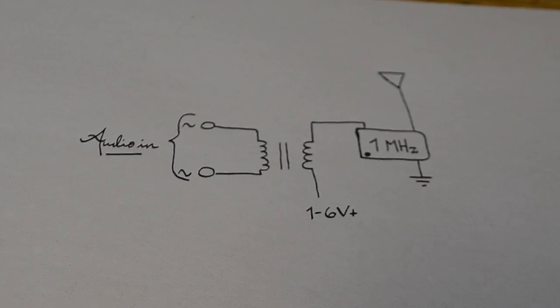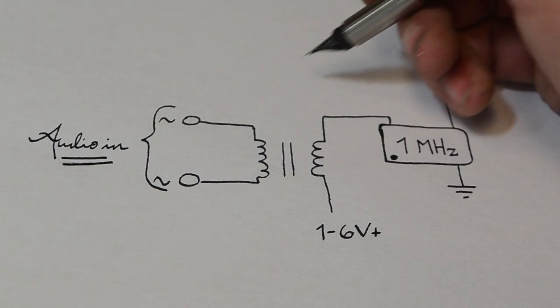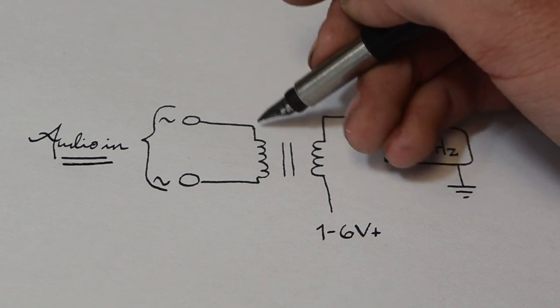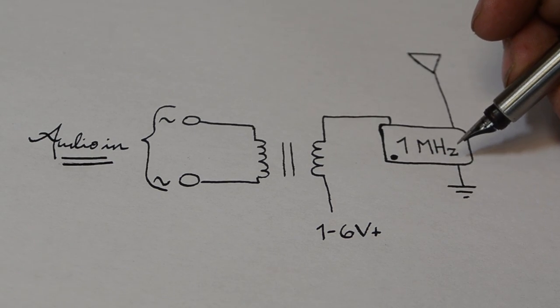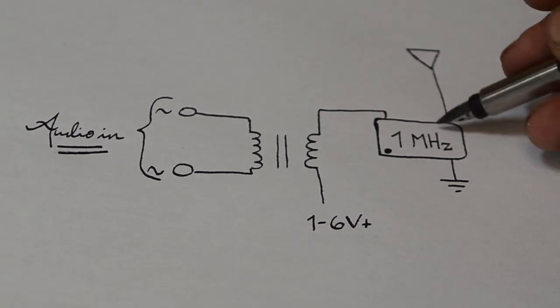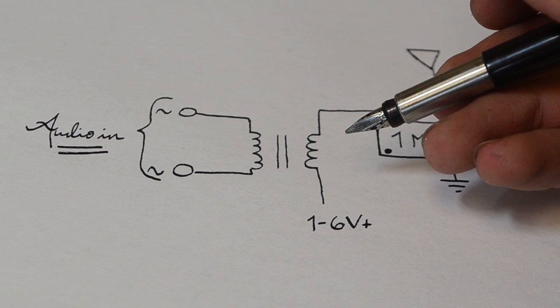Here's the first circuit that you can use and quite frankly the most simple one. Over here we have our audio in. The only two components you need besides that are going to be a transformer like this and then also a one megahertz crystal oscillator. And then attached to that crystal oscillator we have our antenna and then also a DC power supply. So let's go ahead and build this out into a breadboard and see how it sounds.